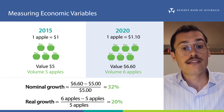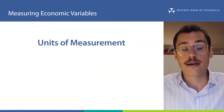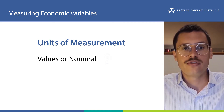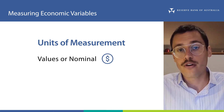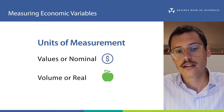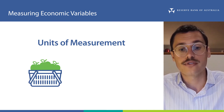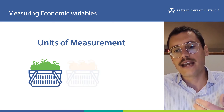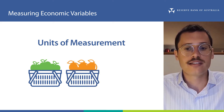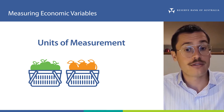Something I want to note here is the units that we use to measure the size of our apple economy. For values, or our nominal measure, we use dollars as the units, but for volumes, or our real measure, the units we used was apples. This was fine because our economy consisted of only one good — apples — but what would we do if we added oranges to our economy? Five apples isn't the same as five oranges. How would we measure the size of the economy in volumes now?